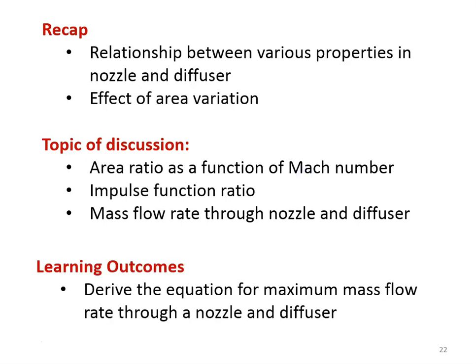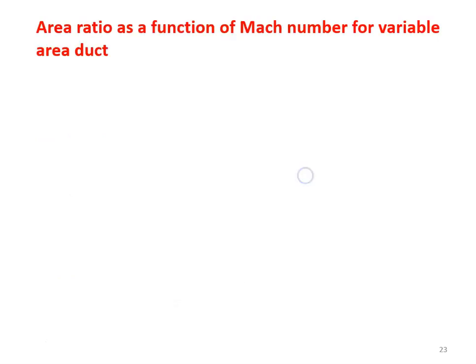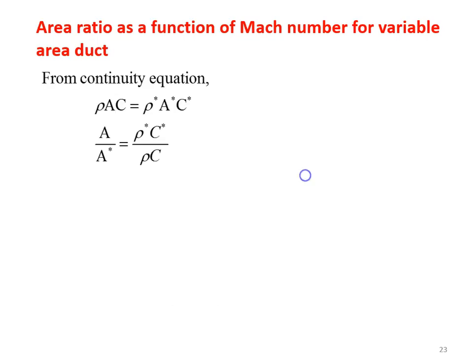The learning outcome for students: the important derivation is to derive the equation for the maximum mass flow rate through nozzle and diffuser. So at the end of the lecture, the student will be able to derive the equation for maximum mass flow rate through nozzle and diffuser. Area ratio as a function of Mach number for variable area duct.